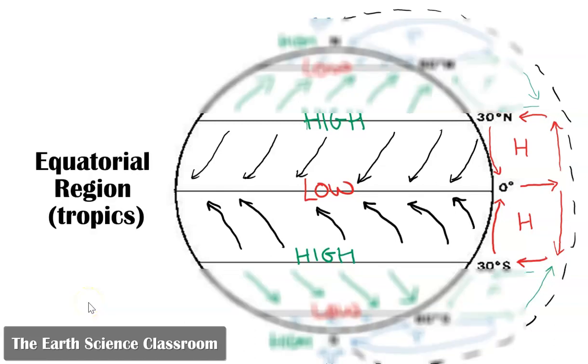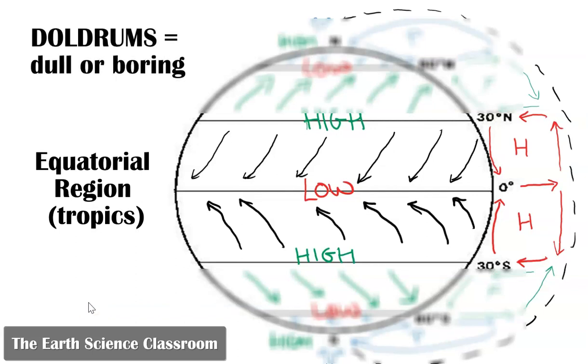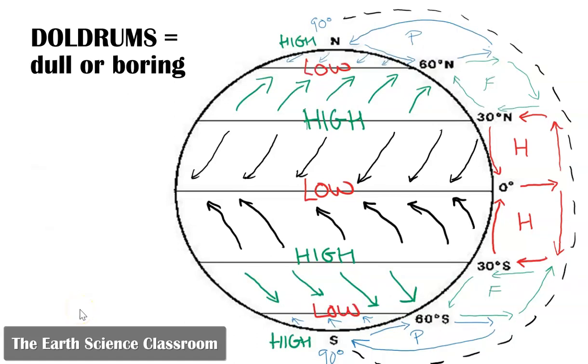So around the equatorial region, we call this the doldrums. Now the doldrums is an old English word that originates from an area being very dull, very uninteresting, very boring, and also is linked to the word tantrum. So why would you call this area dull and boring?